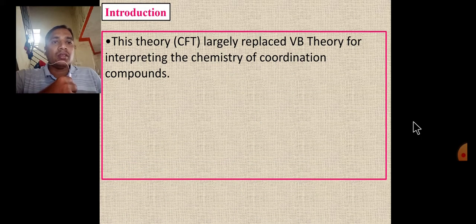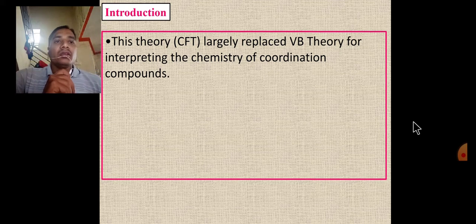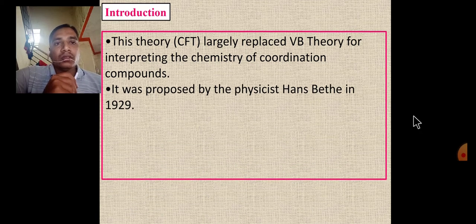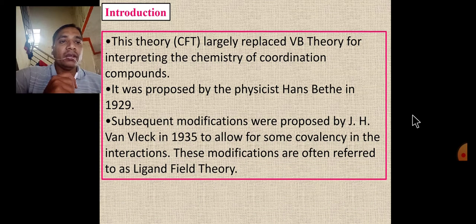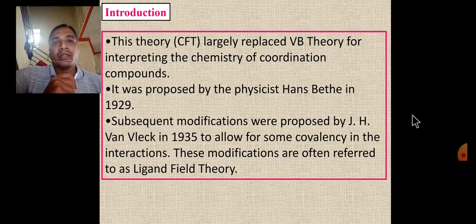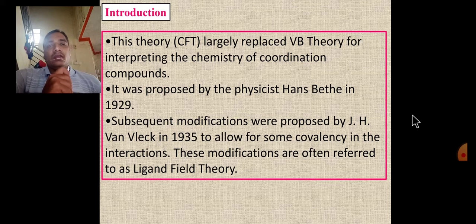Crystal Field Theory largely replaced Valence Bond Theory for interpreting the chemistry of coordination compounds. This theory was proposed by physicist Bethe in 1929, but with a few exceptions. The theory was later modified by J.H. Van Vleck in 1935 to allow for some covalency in the interaction. These modifications are often referred to as Ligand Field Theory.